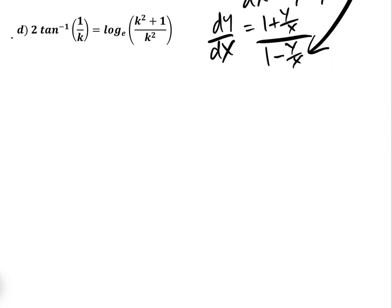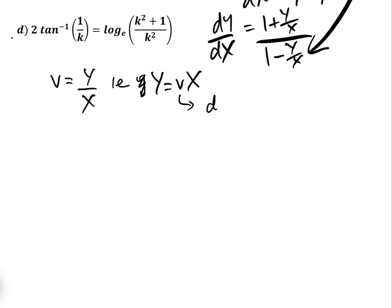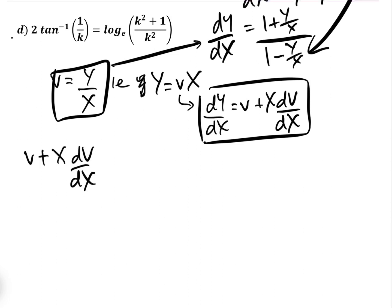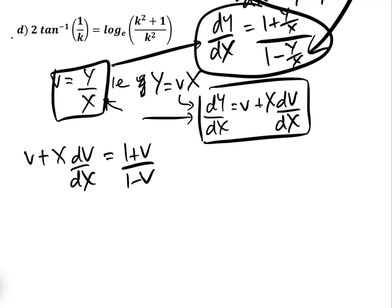As discussed in the previous Gresti Academy video, we use the substitution v = Y/X, i.e. Y = vX, and from that dy/dx equals v + X dv/dx. We then plug these into our equation, which gives us v + X dv/dx = (1 + v) over (1 − v), simply substituting those expressions in.